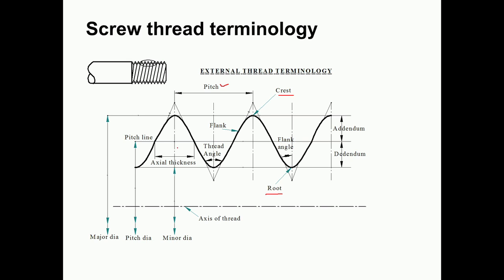Double the flank angle is known as thread angle. The pitch line bisects the thread such that the thread material space is equal to the air space. The diameter at the pitch line is known as pitch diameter. The distance between the pitch line and the crest point is known as addendum, and the distance between the root and the pitch line is called dedendum.